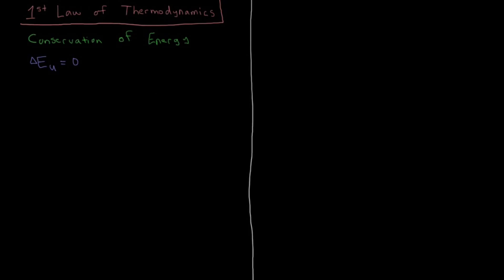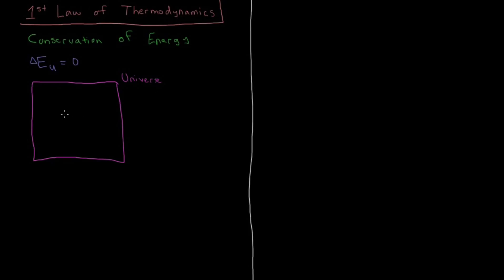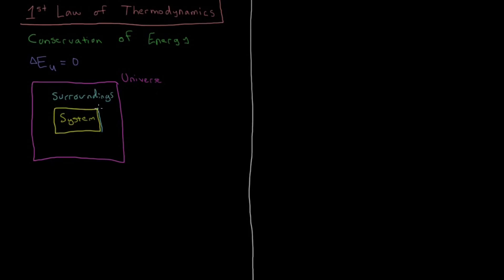The energy of the universe is constant, so let's draw the universe here. This box is the universe — everything that has ever existed, exists, or ever will exist is inside this little box called the physical or material universe. Inside this universe, we have two different locations. We have the system, which is the system of interest for whatever thermodynamic process we're studying. And then outside of the system, we have the surroundings, which is just everything inside the universe that is not the system.